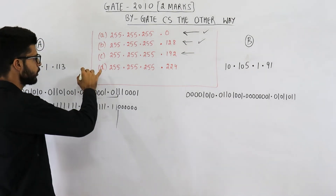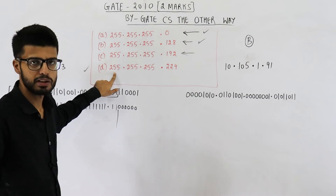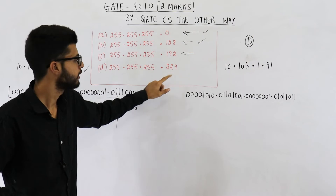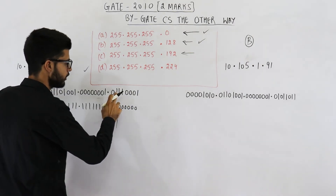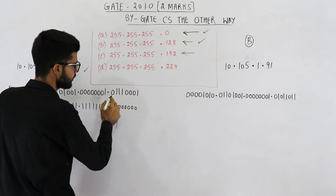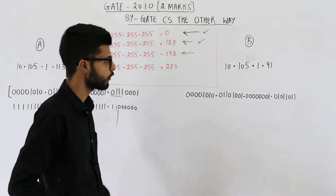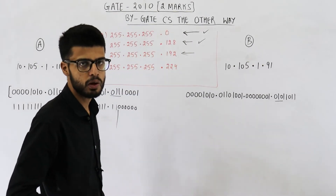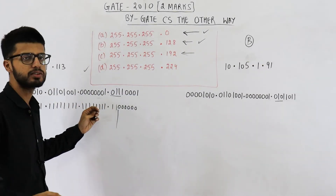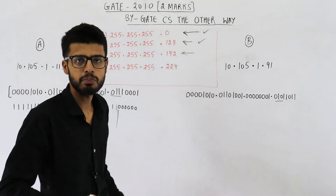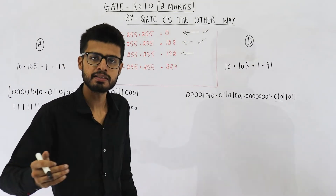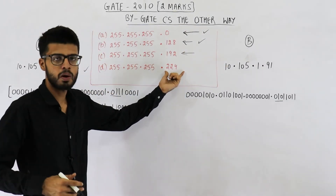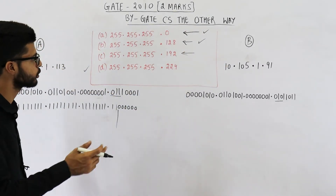That means the answer will be option D. This will not work because here we have three bits from the fourth octet as part of the network ID. For A, these three bits are zero one one, but for B these three bits are zero one zero. So this will not work because the network IDs of machine A and machine B are now different. They were saying both machines belong to the same network, but option D does not allow that.